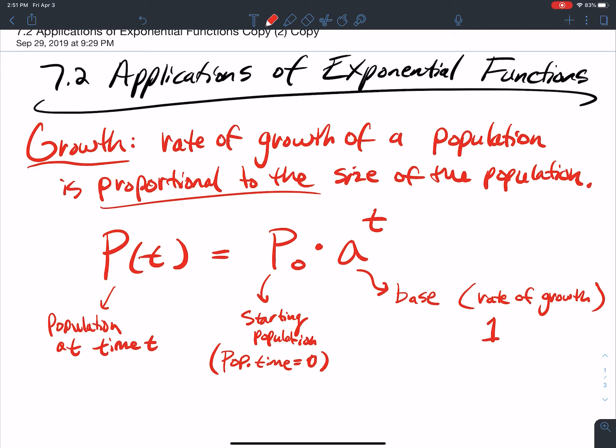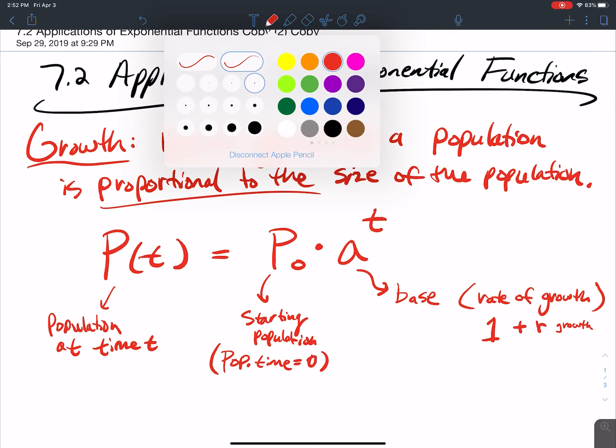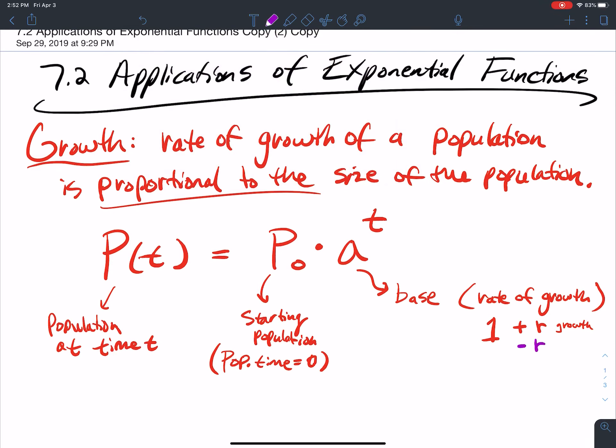You do one plus the rate for growth, and minus the rate for decay. So one is your starting point. You start out with 100% of whatever you have, and if you're growing, it's like 1.05 or something as your base. You add 0.05, that 5% growth rate. If it's a decay, you're taking 5% away. So one minus 0.05, that's 95% growth rate. It's shrinking each time by 5%.